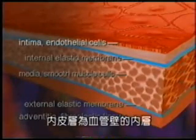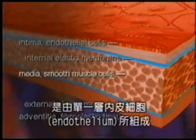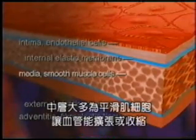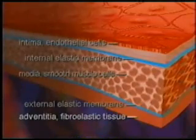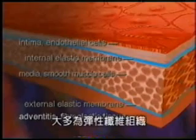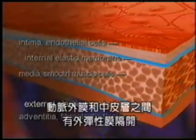The intima, or inner layer, is composed of a single layer of cells called the endothelium. The media contains mostly smooth muscle cells that enable the vessel to dilate or constrict. The adventitia, or outermost layer, is composed mostly of fibroelastic tissue. The adventitia is separated from the media by the external elastic membrane.